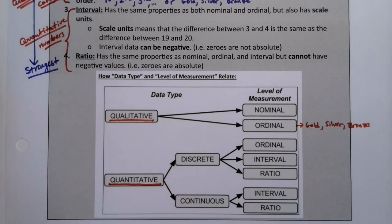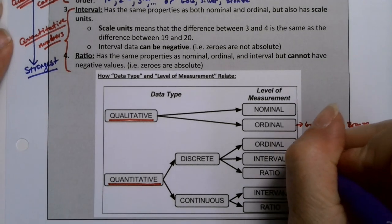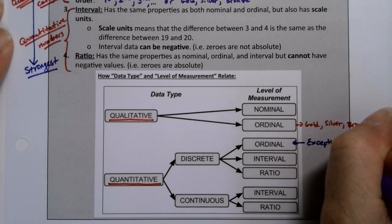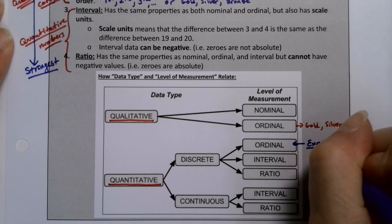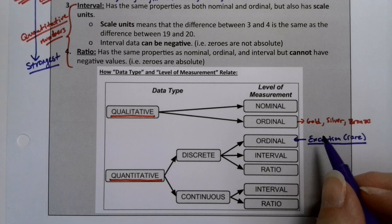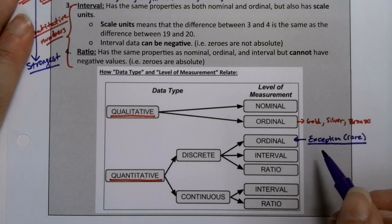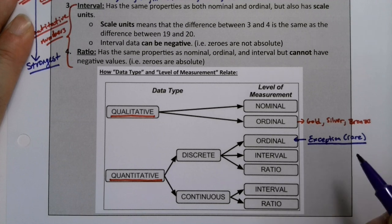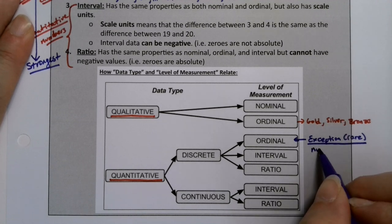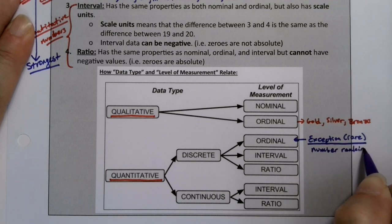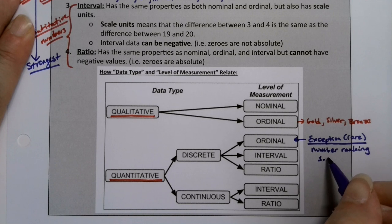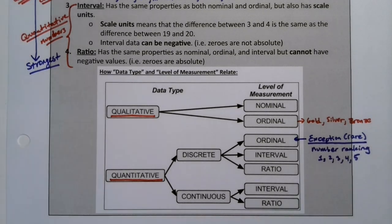Whereas interval and ratio are all either discrete or continuous. Quantitative is interval and ratio. Now, there's one exception to that. It's not really a great exception, but it's an exception, which is number ranking. And it's a rare exception. Actually, I don't know how rare it is. It actually happens all the time. At the end of the semester, you're asked to rate your professors at the college on a variety of categories, and they'll say, give them a score from one to five.